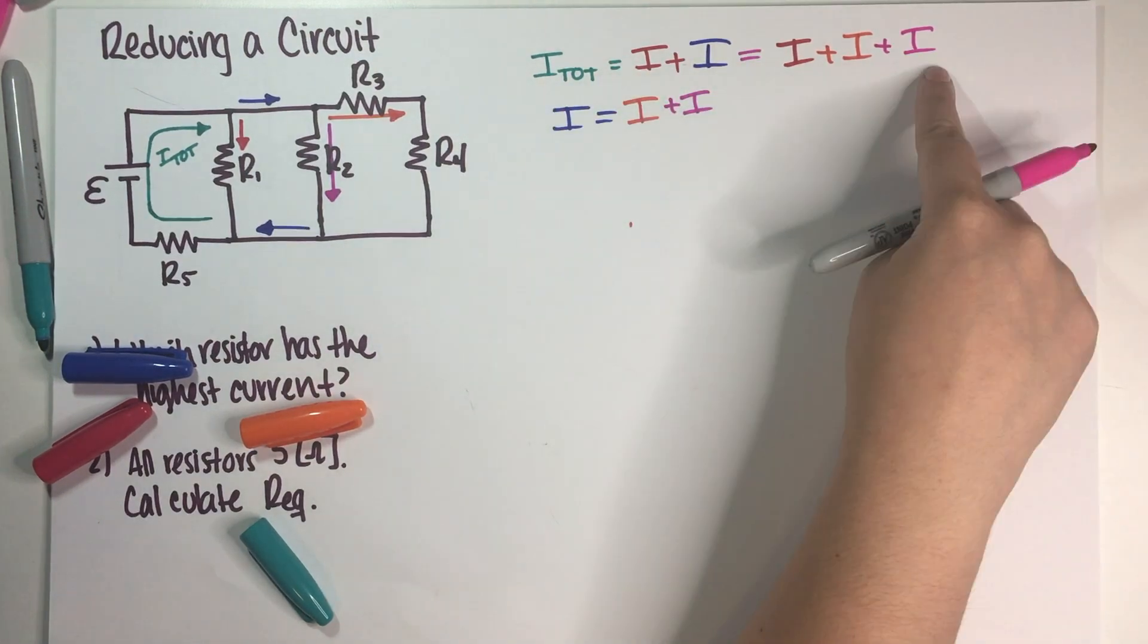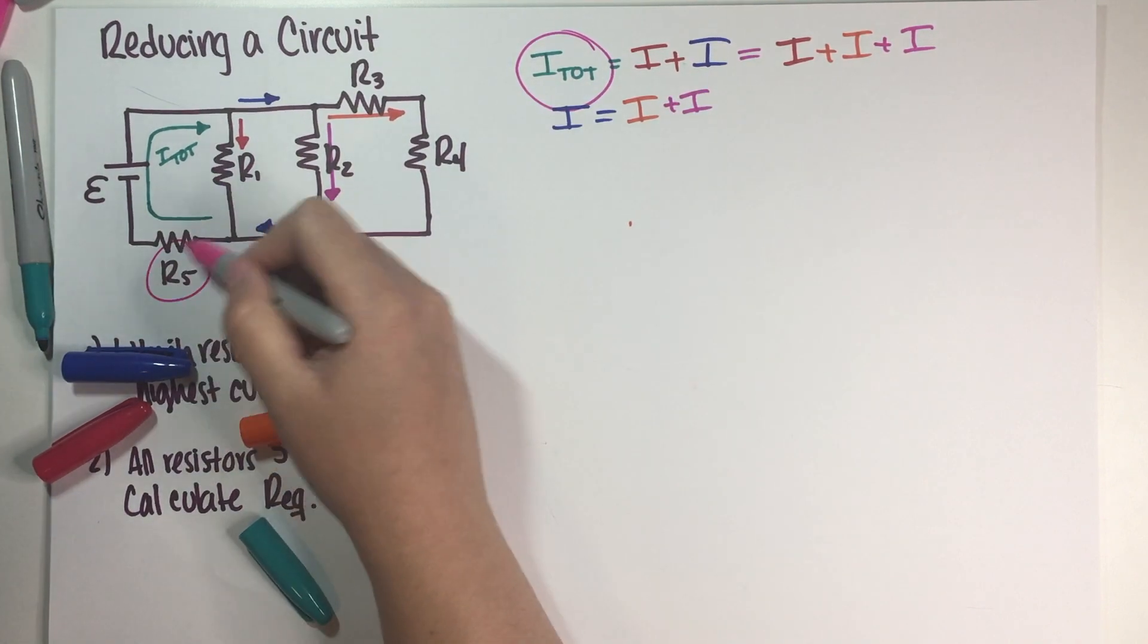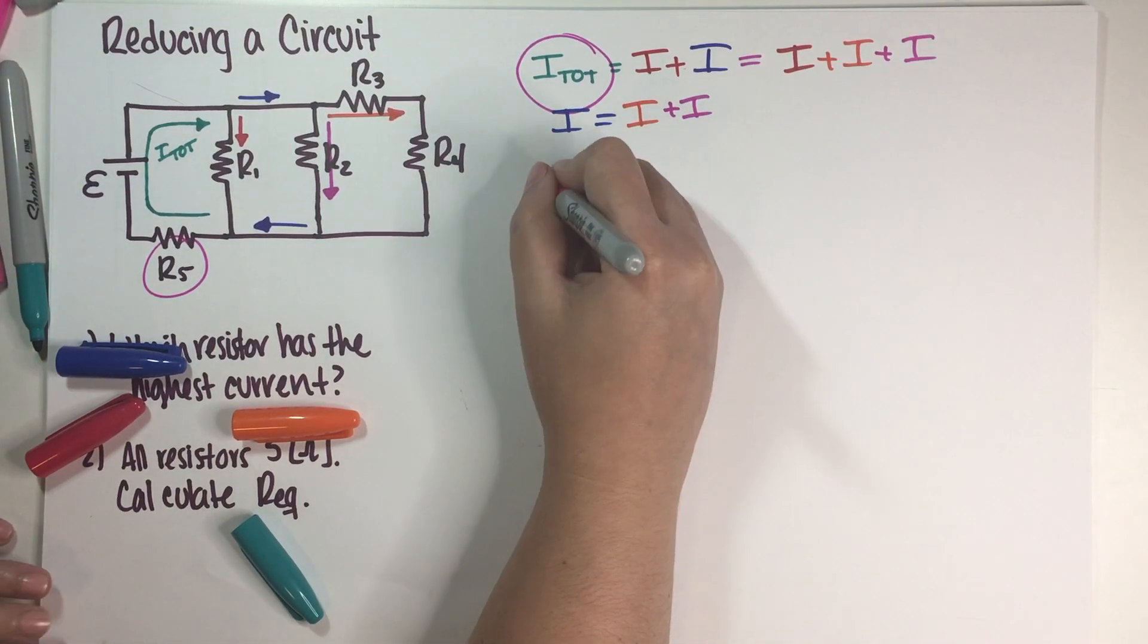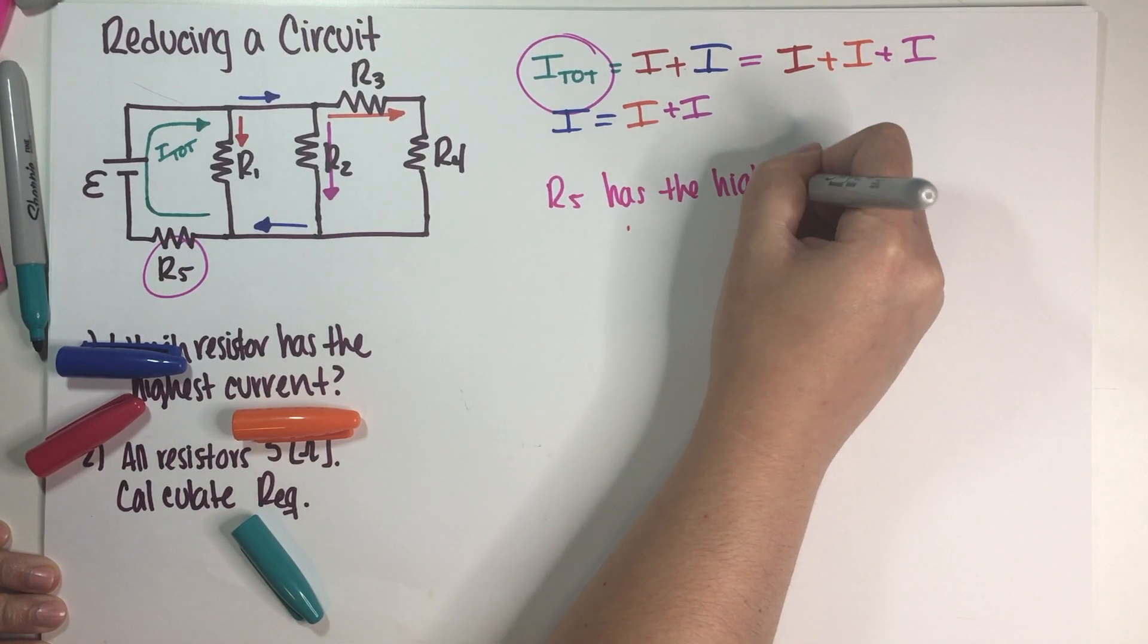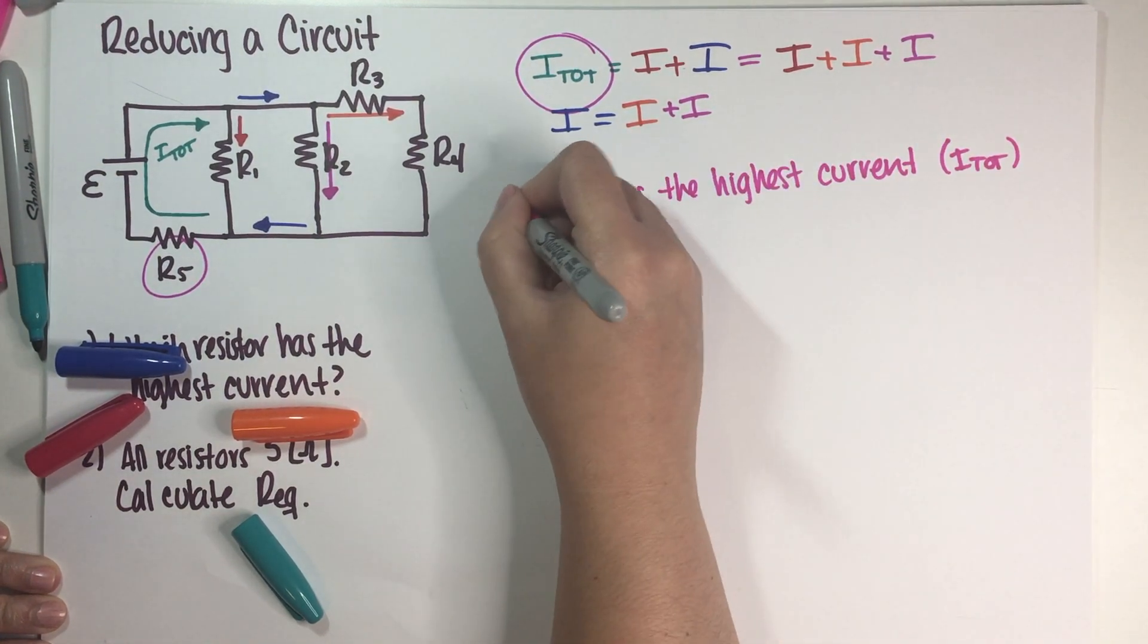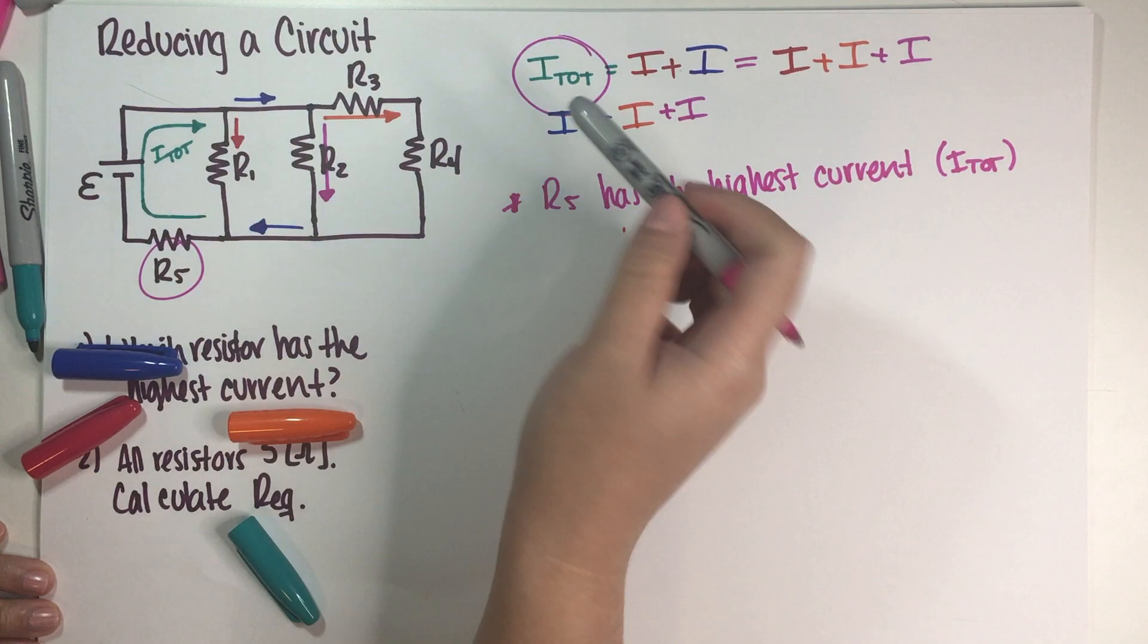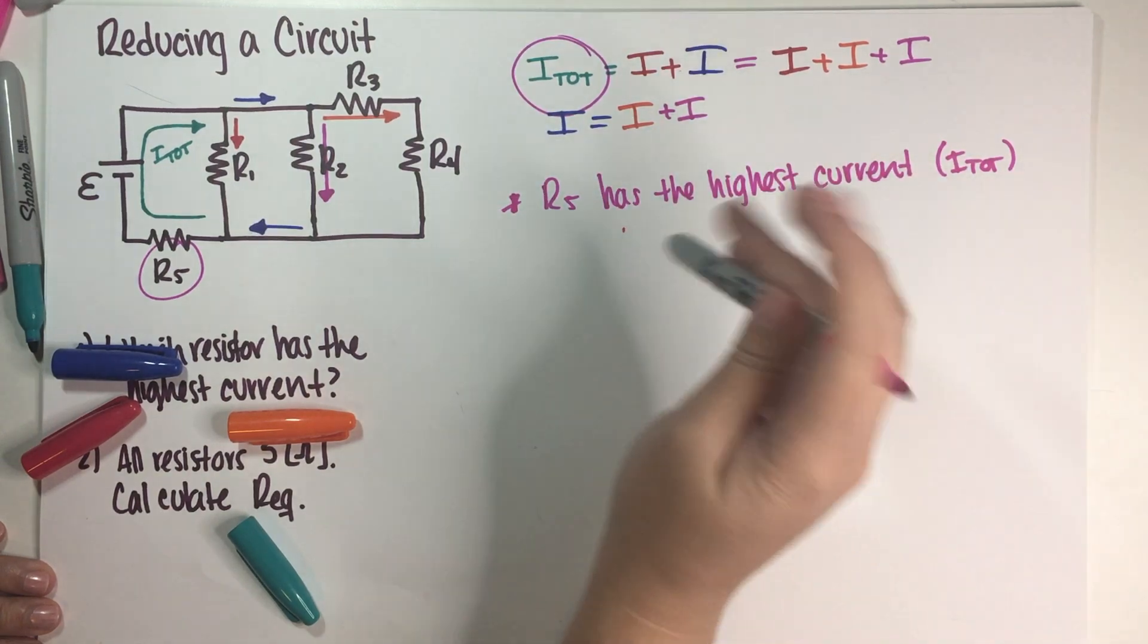So regardless of the values of these currents, this is the total current. So this is the highest current, and this current is only hitting one resistor. So our final answer is that regardless of the values of the currents, and regardless of the values of the resistors, R5 is the one that has the highest current. And that current is the total current on your electric circuit. Final answer. This is basically a good enough explanation. We're using our continuity equation every time we hit a junction. And just by using that, we know that there is no current that's higher or greater than the total current.